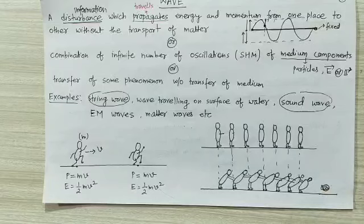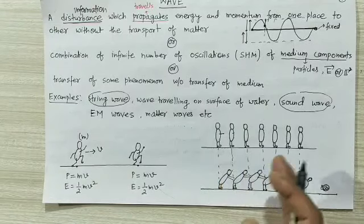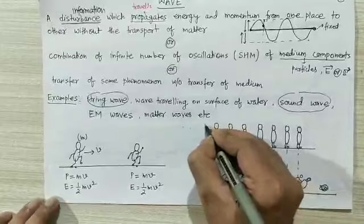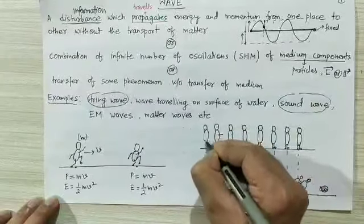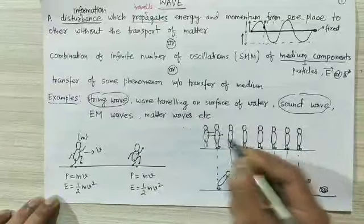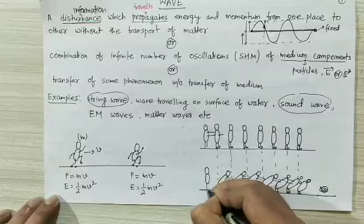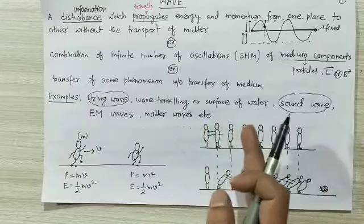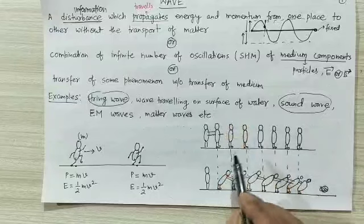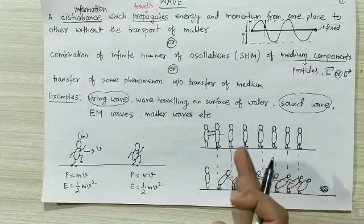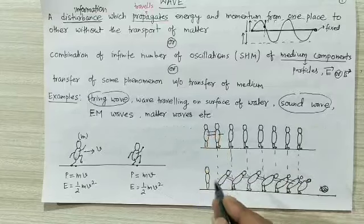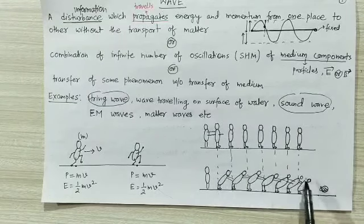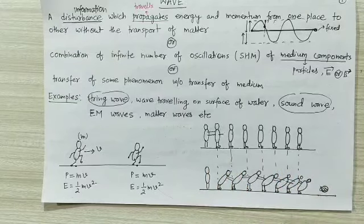Now see situation number 2. Some persons are standing in a queue and a new person comes from outside and pushes the person next to him. This person will lean in the right direction and push the next person, and that person pushes the one in front of him. All of them get disturbed. The energy transferred at this location travels from that location to another location. So this situation can be considered an example of a wave.